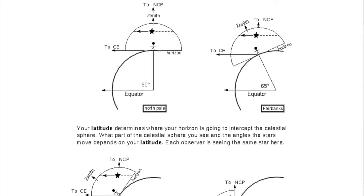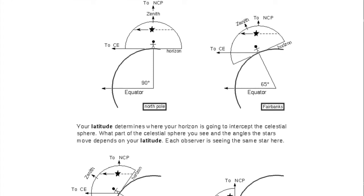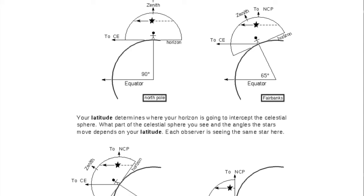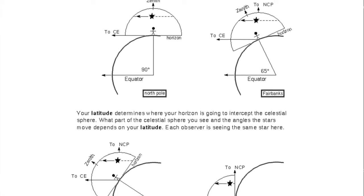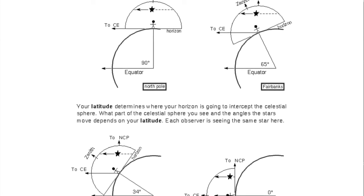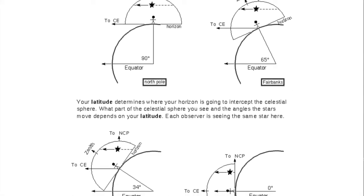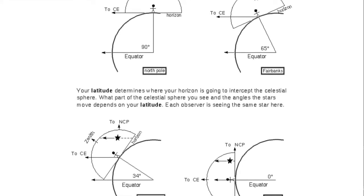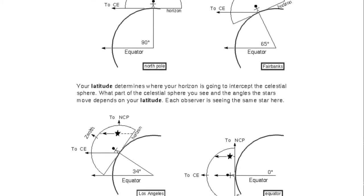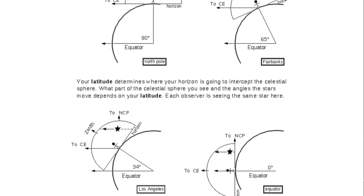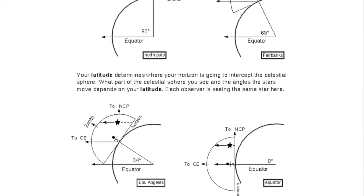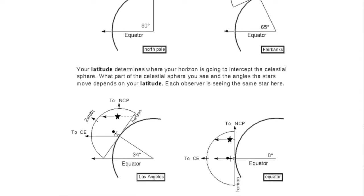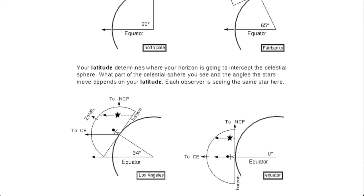Now we are going to take a look at how the sky moves from various locations on the earth. First, let's look at a drawing that summarizes the motions all on one page. This picture is in your student guide opposite the lecture outline page. The drawing shows how your latitude, which is the number of degrees you are from the equator, determines what part of the celestial sphere you can see and the angle the stars will move with respect to the horizon. In this picture and in the next ones that follow, each observer is observing the same star or set of stars.